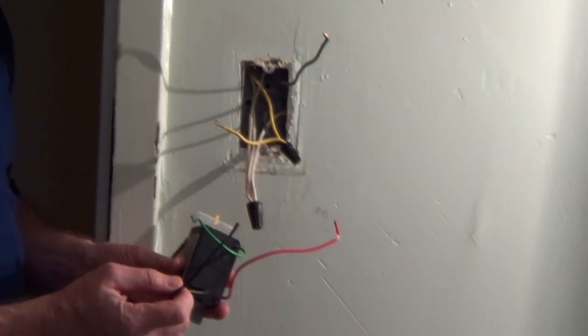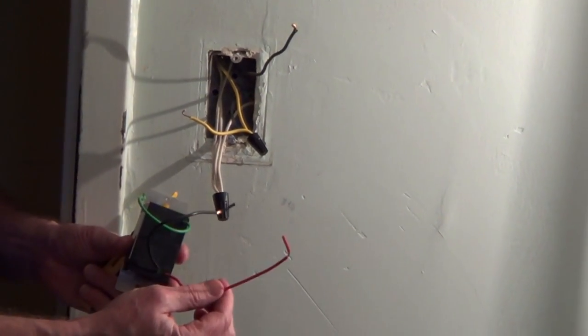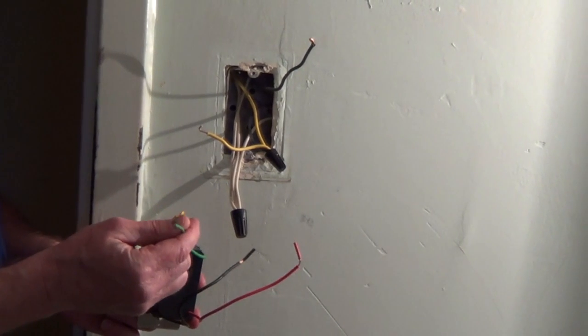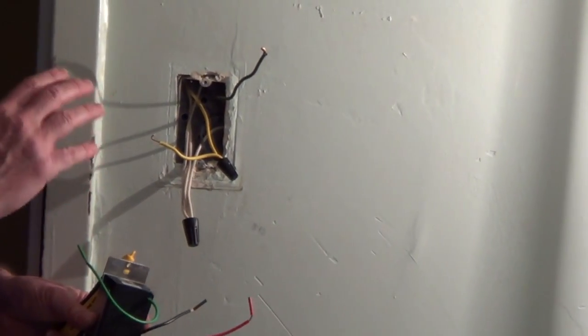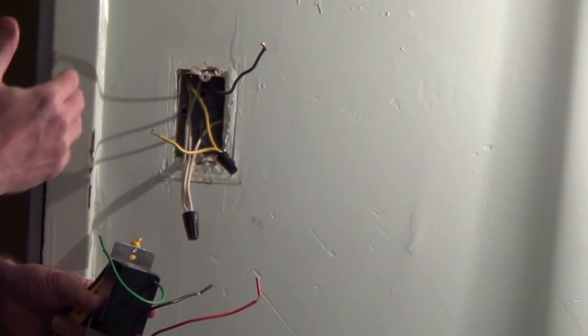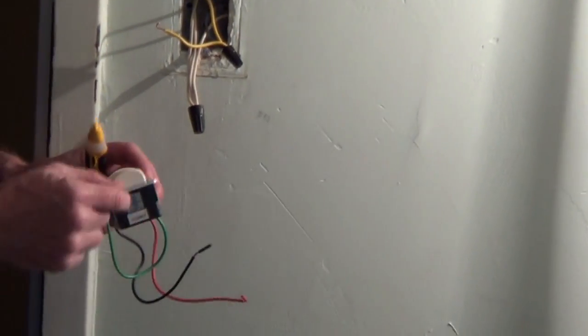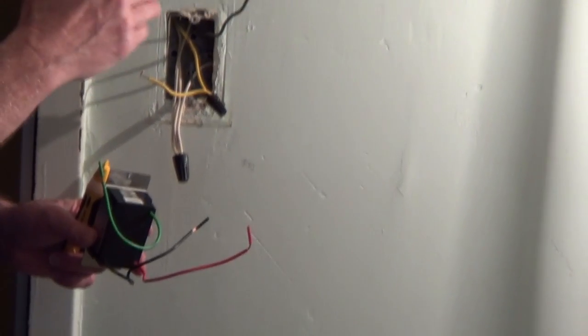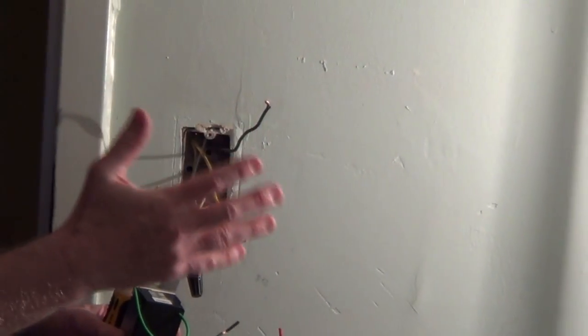So black wire from the service panel, the red wire to the load and a green wire if you had a ground in here. Now we're in the Chicago area and we have all metal conduit and so when we screw this in with metal screws it's going to be grounded to the box and then the metal pipe all the way back to the service panel.